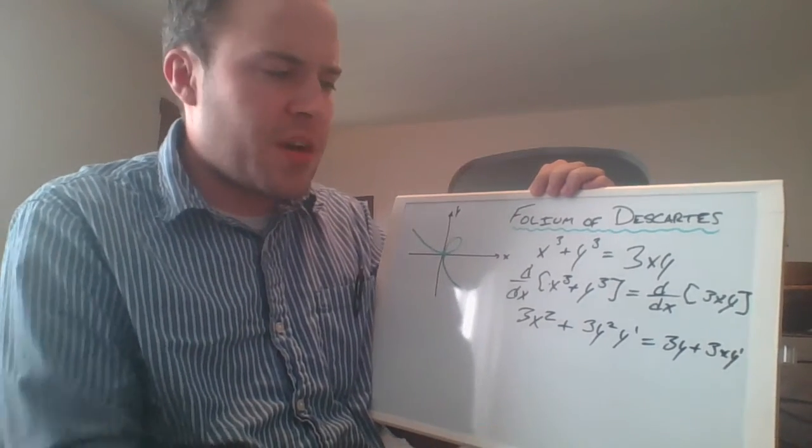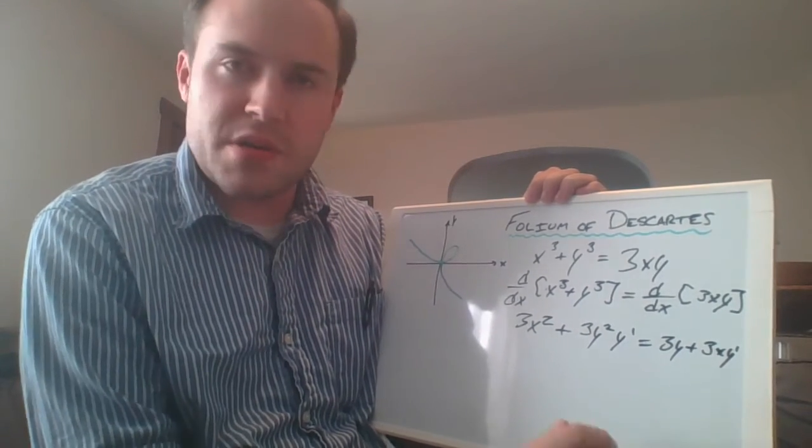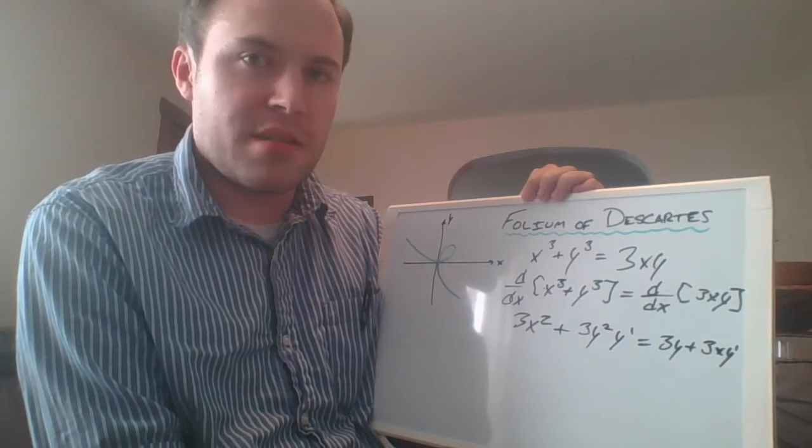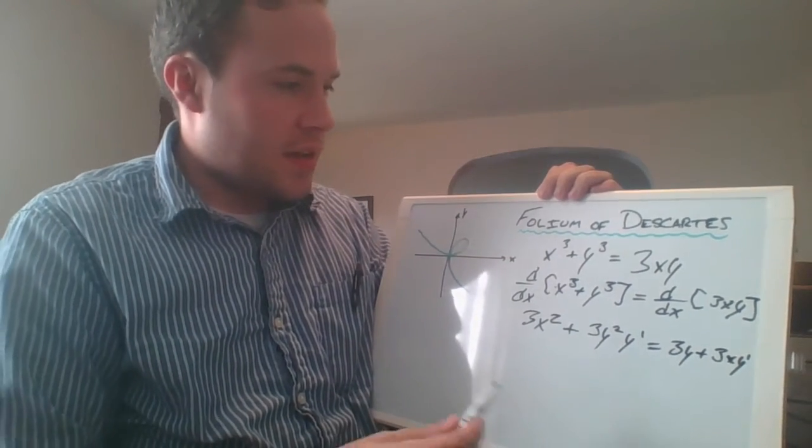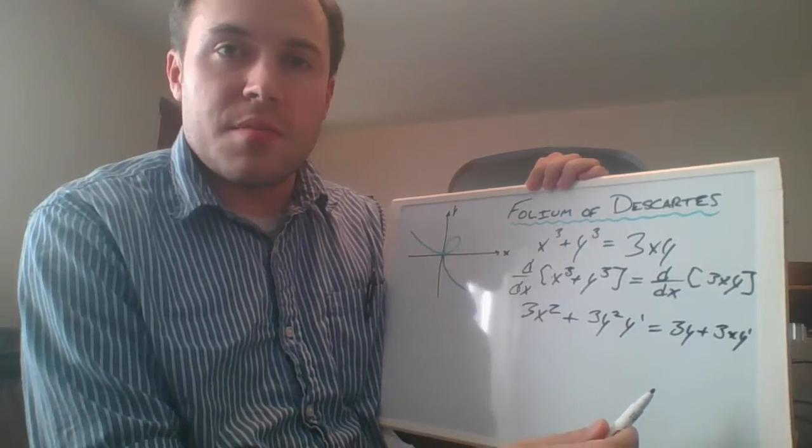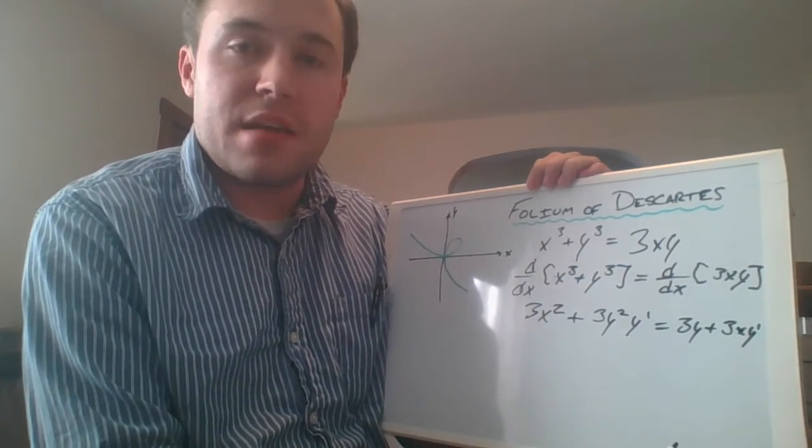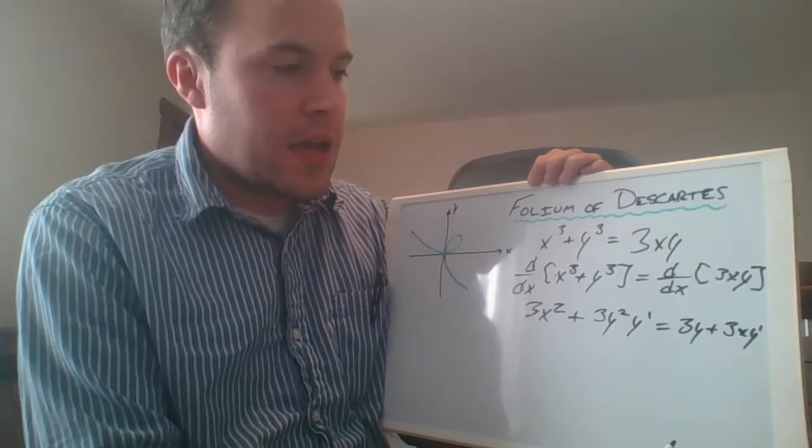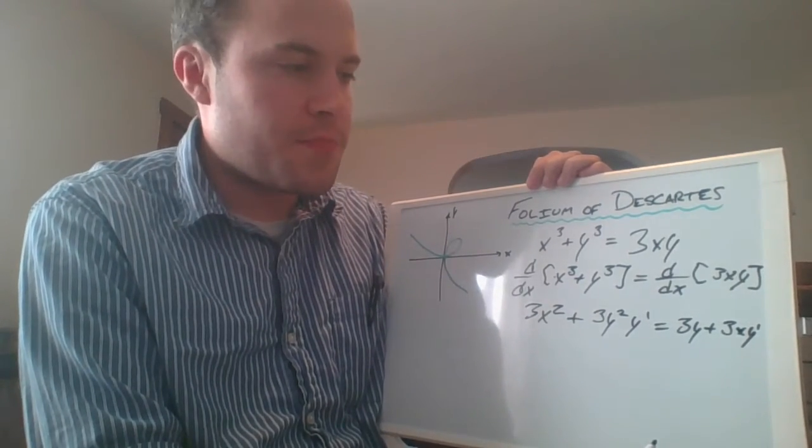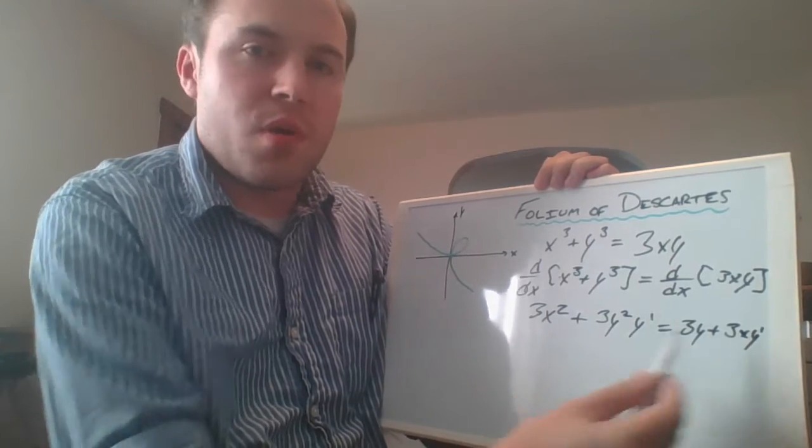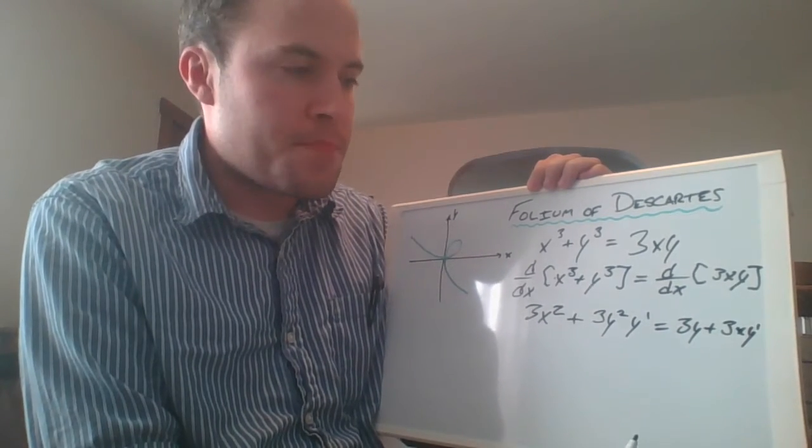Very much like the example we did in class today, where we were trying to find horizontal tangent lines using implicit differentiation, what we want to do is recognize that a horizontal tangent line means that the slope of that tangent line is zero. Since derivatives correspond to slopes of tangent lines, that means that y prime should be zero.